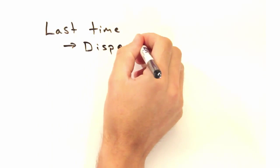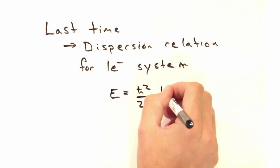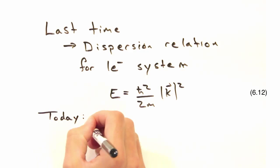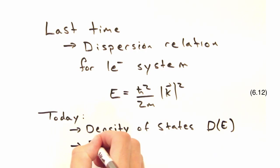Last time, we developed a dispersion relation for a one-electron system. Today we'll expand upon that and come up with an expression for the density of states and apply some Fermi-Dirac statistics.